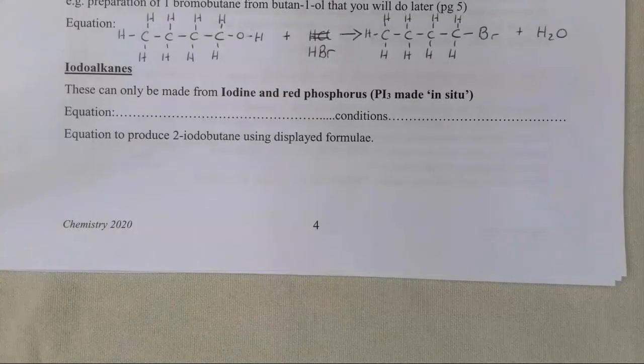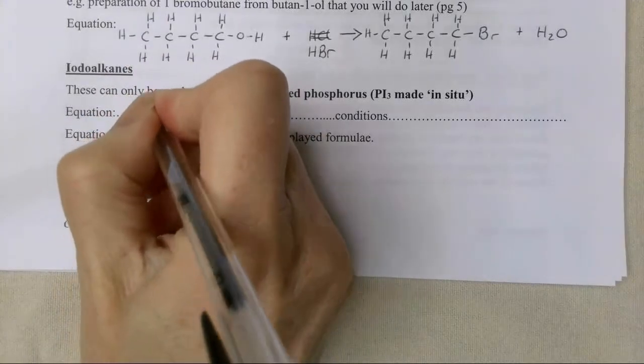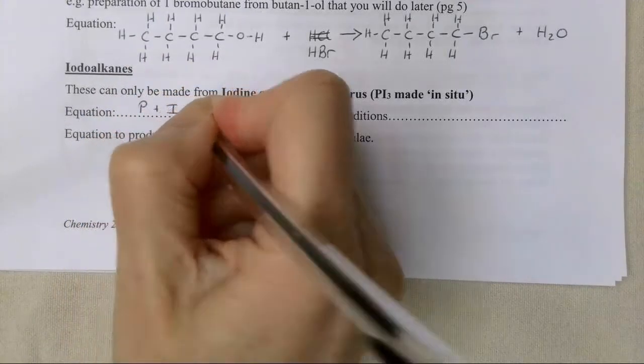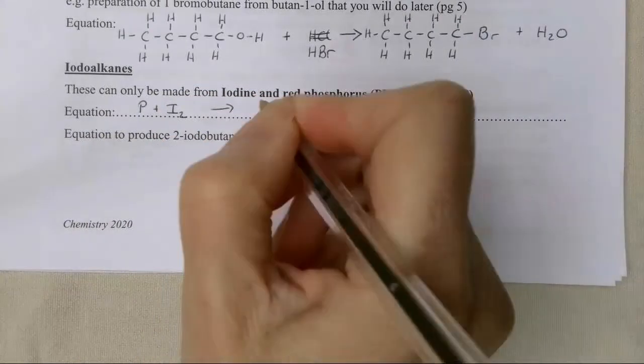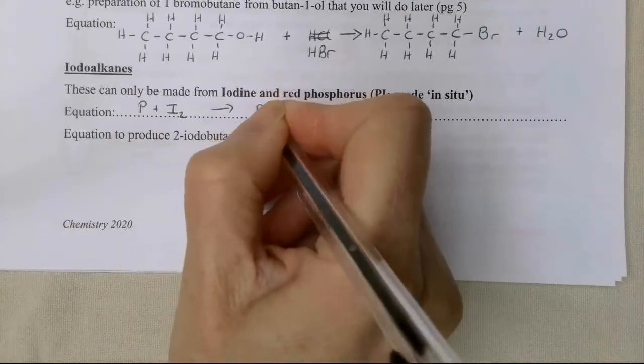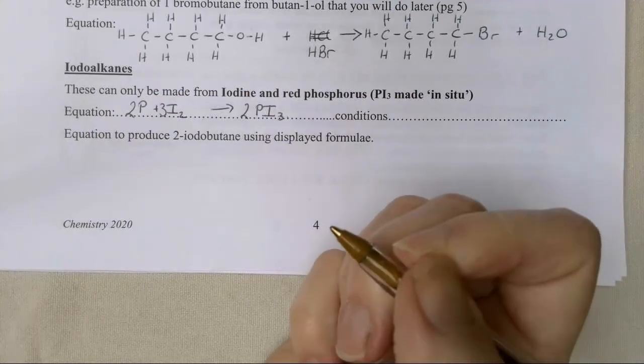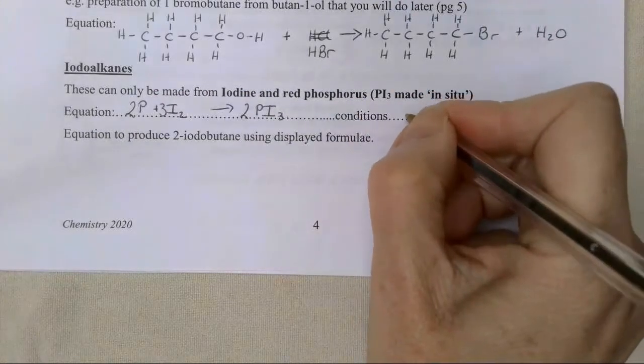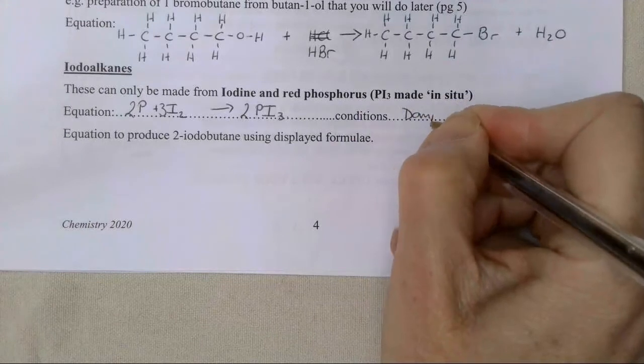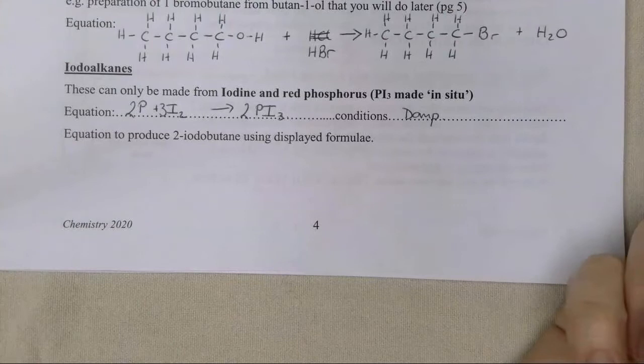The last one in this set is the iodoalkanes. These can only be made from iodine and red phosphorus, PI3, which again is made in situ. Phosphorus and iodine react together to make PI3. I can double it up if I want to. The conditions are damp because it's damp red phosphorus, but room temperature is fine.